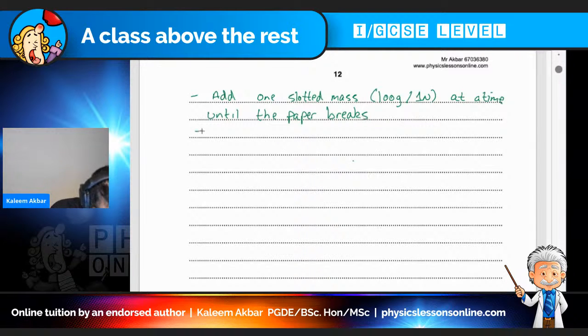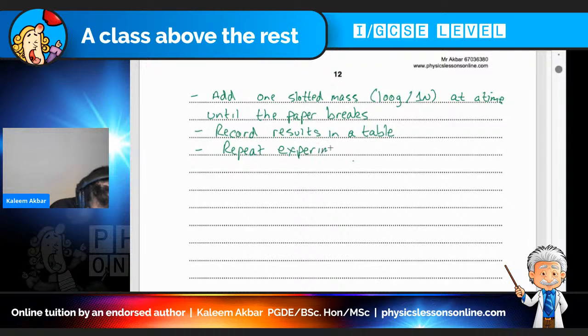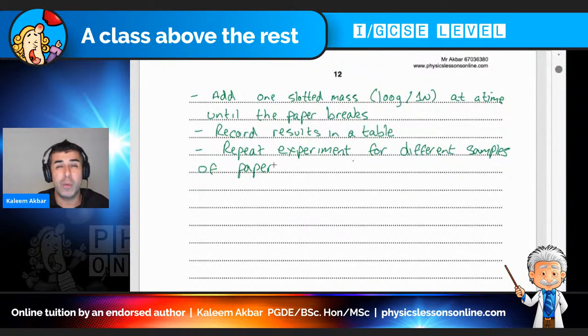At a time until the paper breaks. Okay. Record results in a table. And then repeat the experiment for different samples of paper. Now, what have I done so far? I've done the apparatus and now I'm very briefly explaining how I'm going to carry out this experiment. I'm going to add one slotted mass at a time. Once I've done that, I'm going to check out which weight that it breaks. I record those results in a table and then I repeat the experiment for different samples of paper.